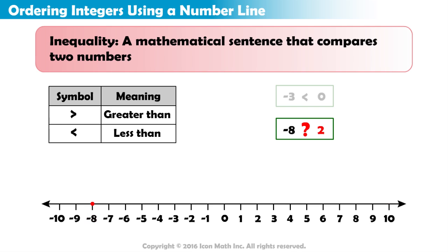What about the number 2? Is the number 2 located to the left or right of 0? 2 is a positive number, so it is located 2 places to the right of 0. Now that we've plotted these points on the number line, we see that negative 8 is to the left of 2.